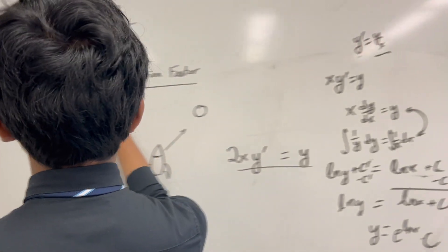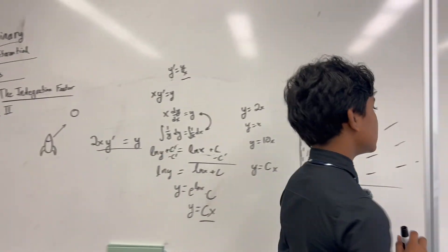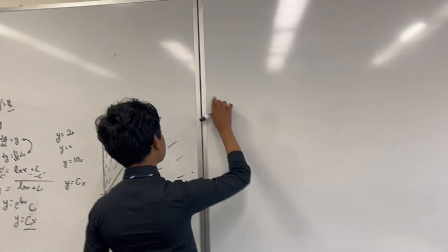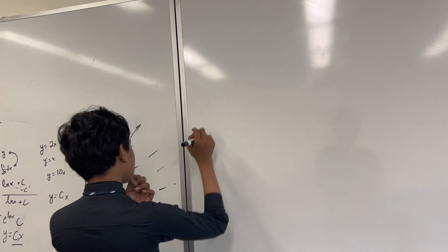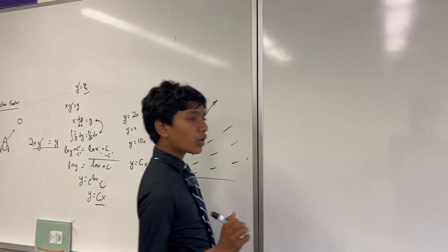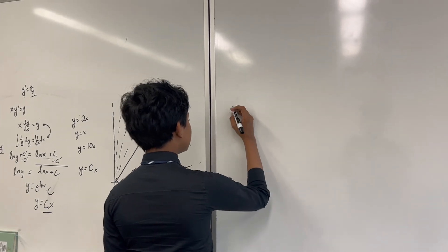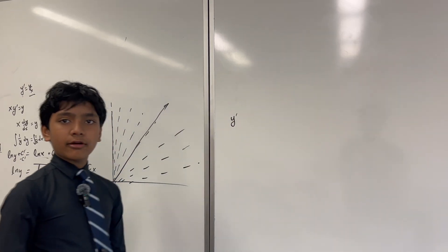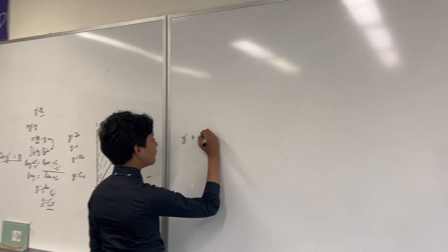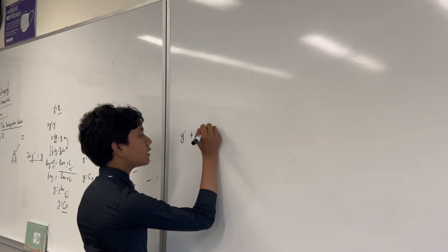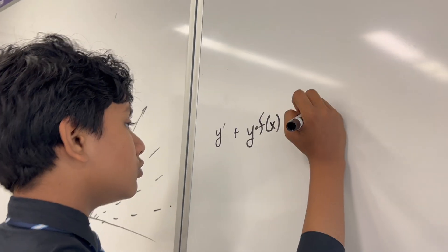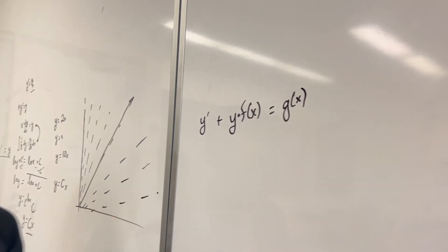Today we'll be solving some trickier differential equations with the integration factor. Essentially, first what we want to do is get it into what we call standard form. We have the derivative y prime, then y times some function of our variable that we'll call f of x, and this is equivalent to another function of our variable, g of x. For example: y prime plus y times 2x equals e^(2x).